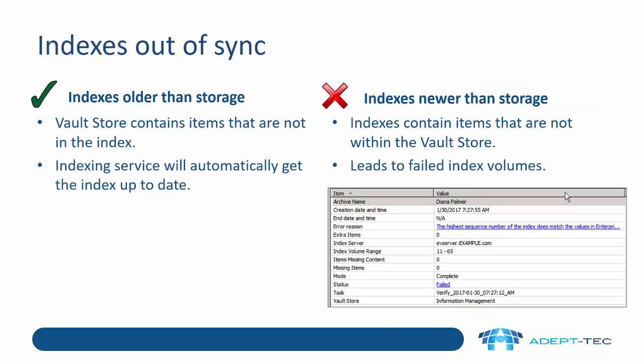So first of all, let's talk about what happens when the indexes get out of sync. If the indexes are older than storage — meaning the Vault Store contains items that are not in the index — then that's fine. That's how EV works normally, in that storage is ahead of indexing. So the indexing service will just automatically get the index up to date. It does this when the indexing service starts, and periodically it will check all the archives to see whether items need to be indexed, and it will just do it.